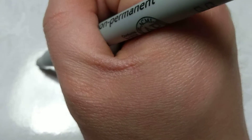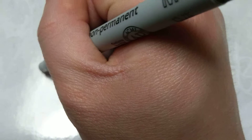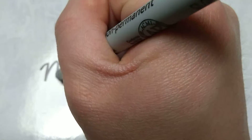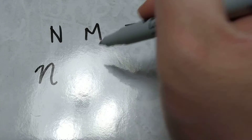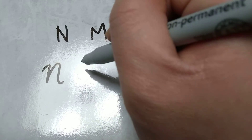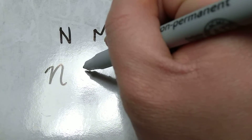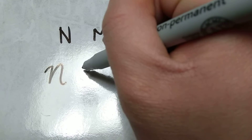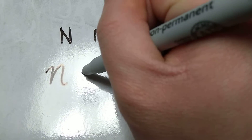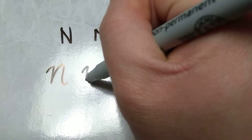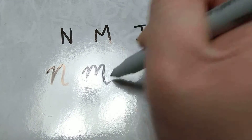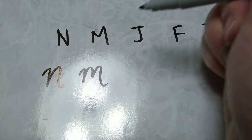The letter N looks like the lowercase n except bigger. The letter M looks like the lowercase m except bigger.